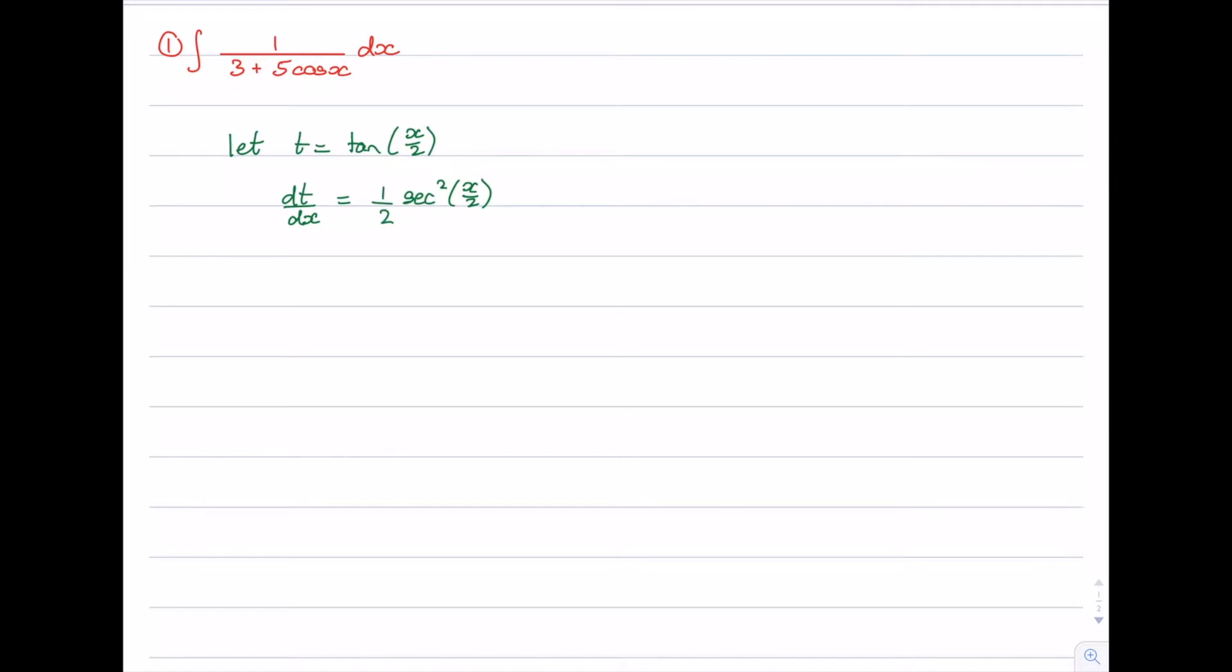We want to change everything so that it's in terms of t and not x. So what we're going to do is exploit the fact that sec squared is equal to 1 plus tan squared. So this is 1 plus tan squared of x on 2. Well we know what tan squared x on 2 is, that's just going to be t squared because t equals tan x on 2. So this is 1 plus t squared. So we have dt on dx is equal to a half of 1 plus t squared. Now let's rearrange that to get dx equals something because that's what we're going to use for our substitution. So when we rearrange that we get dx equals 2 times dt over 1 plus t squared.